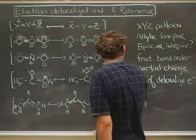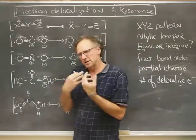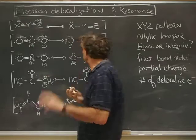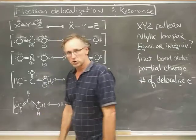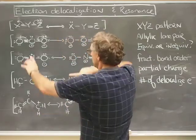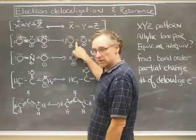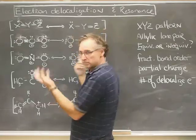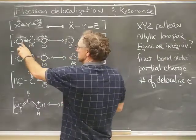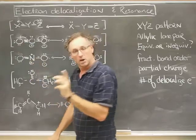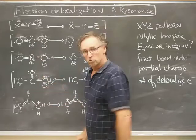And when you have equivalent resonance forms, it means that reality is some average of those. That averaging gives rise to this idea of fractional bond order and partial charge. Here's how it works. In this resonance form I have a double bond, in this one I have a single bond. What's the truth? Well it must be some sort of average. So I would say that the bond order between the first two oxygens is not one, not two, but one and a half. Same thing here, one and a half.